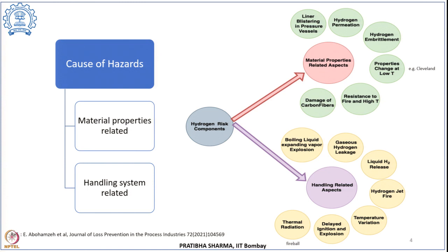Hydrogen embrittlement is a complex phenomenon and it depends upon several parameters: exposure time, purity of the metal, concentration of the gas, temperature and pressure conditions, surface properties of the material, mechanical properties, the alloy selected, and the grain structure and microstructure of that material.